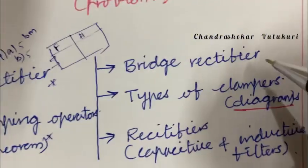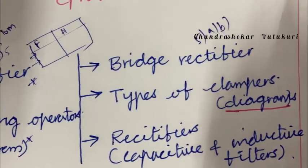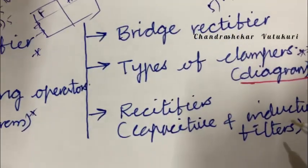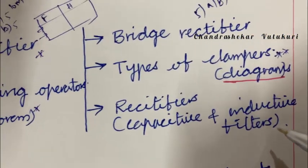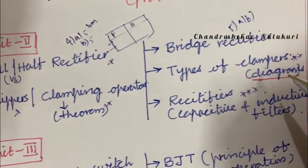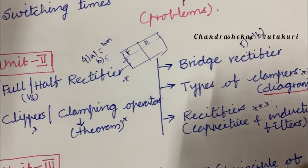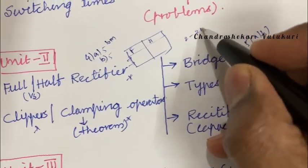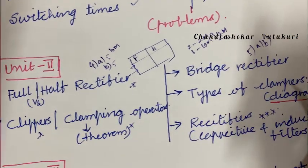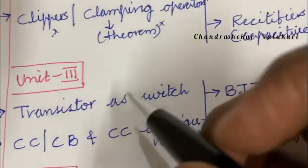Clippers may be a short question. Bridge rectifier may occur in 5A and 5B — all rectifier diagrams to be drawn only in pencil. Types of clampers along with their diagrams is also a topmost question. Rectifiers related to capacitive or inductive filters may be a short or long question appearing in 5A and 5B. Remember, you get two marks for two short questions and ten marks for the long question — a total of twelve marks per question.